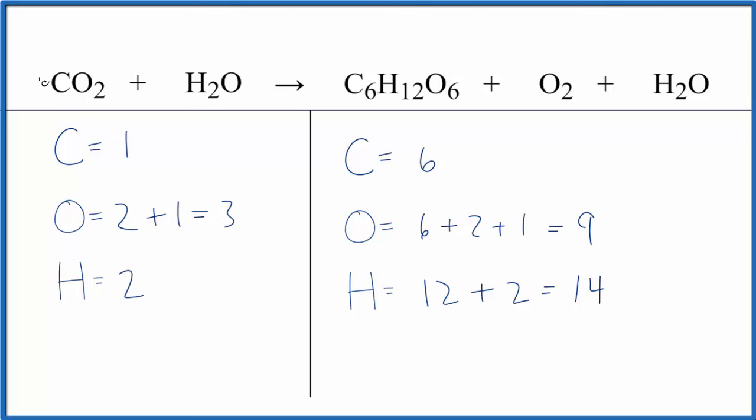Put a six here. One times six. That gives us six of those. We can update the oxygens here. We have 12. Six times two is 12 plus the one. Now we have 13.